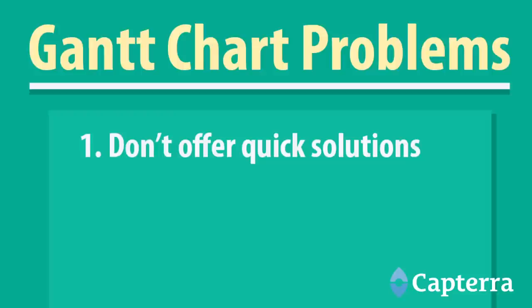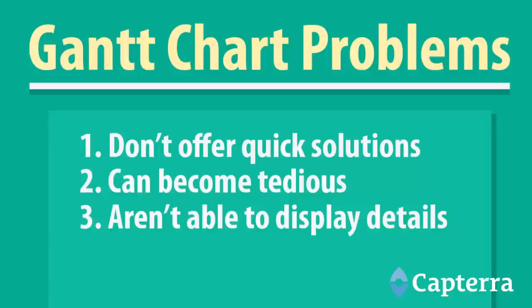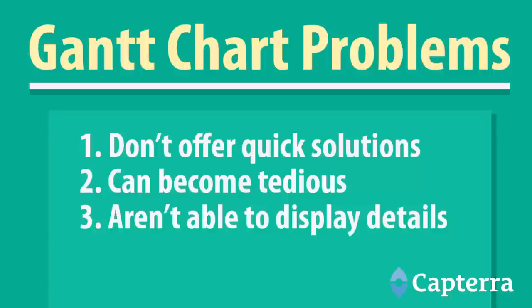Of course, there are objections to Gantt charts. These are the major three. One, as an inflexible project management system, Gantt charts do not offer quick solutions to addressing problems with an unforeseen event. Two, it can become tedious to consistently update the chart or expect teammates to keep their personal charts updated. And three, Gantt charts are largely used to display how far along a project will be at a certain point in time — there's not much space on the typical Gantt chart to elaborate on task expectations or even purpose.